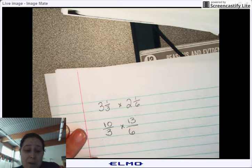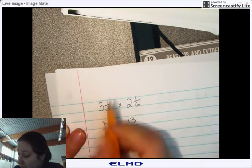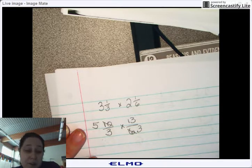And 10 and 6. 10 and 6 both can be reduced by 2. So I'm going to simplify this. I'm going to divide by 2 and I'm going to get 5. And divide by 2 and I'm going to get 3. That's the only way I can reduce that.